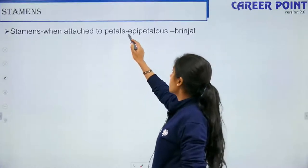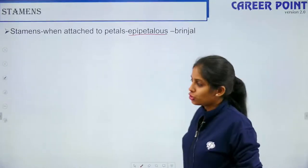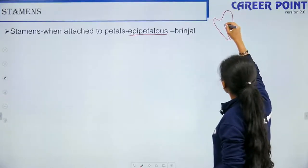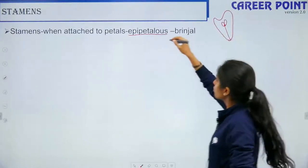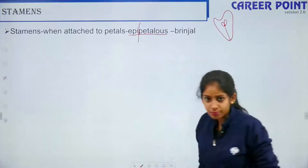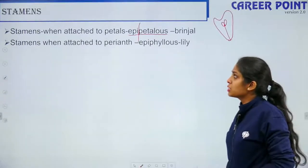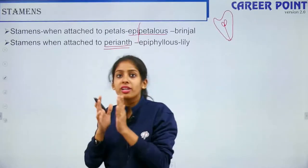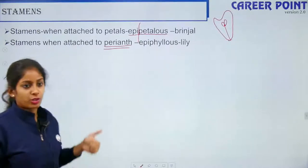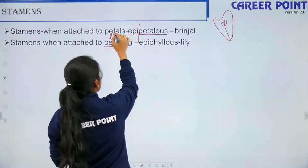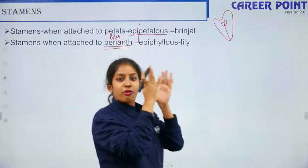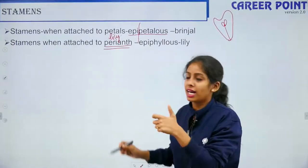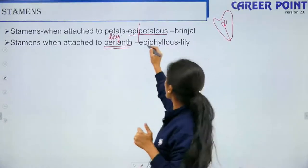When stamens are attached to the petals, it is known as epipetalous condition — example is brinjal. When stamens are attached to the perianth — that is, when calyx and corolla are fused together and not distinct from each other, that is perianth condition, seen in lily — it is known as epiphyllous condition.